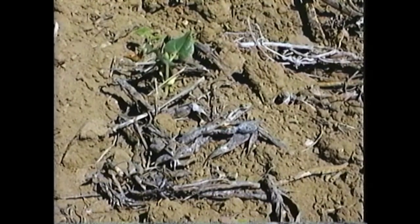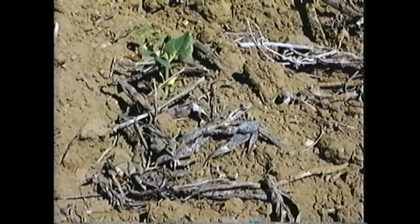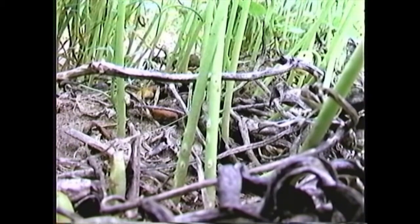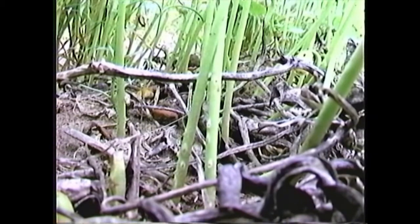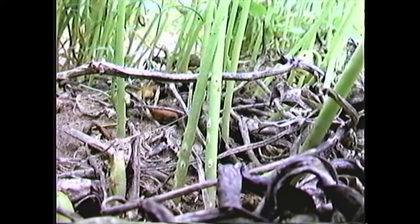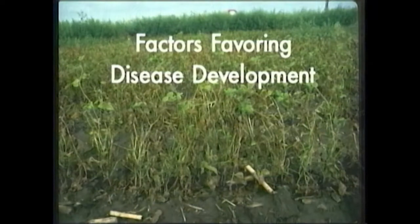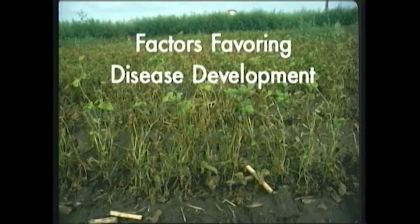The rust fungus survives on and within the previous year's bean debris. Volunteer beans provide the bridge between last year's debris and infection sources which can threaten this year's bean crop. Lack of crop rotation can contribute to this season's disease pressure, and continual cropping to beans can aggravate disease outbreaks.